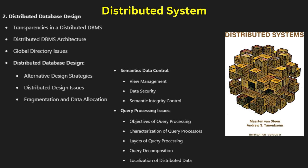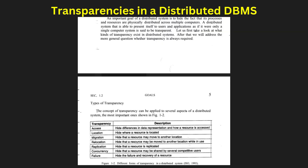Let's get started with transparency in distributed DBMS. Transparency ensures that users perceive the system as a single unified database, even though data is distributed across multiple locations. There are several types: location transparency, replication transparency, fragmentation transparency, concurrency transparency, failure transparency, and performance transparency. Location transparency allows users to access data without knowing its physical location.